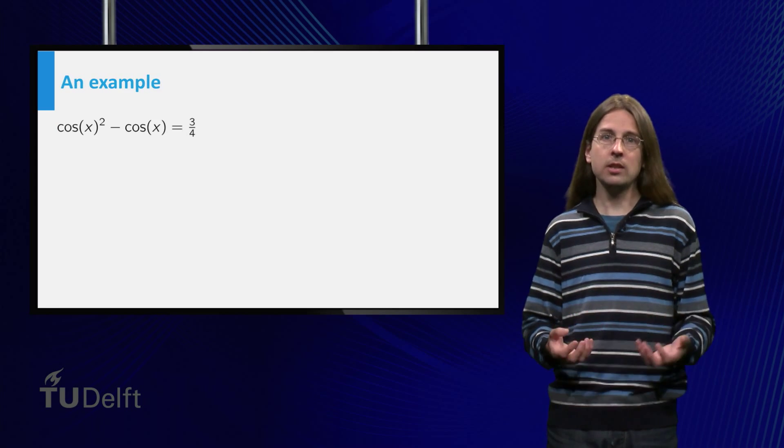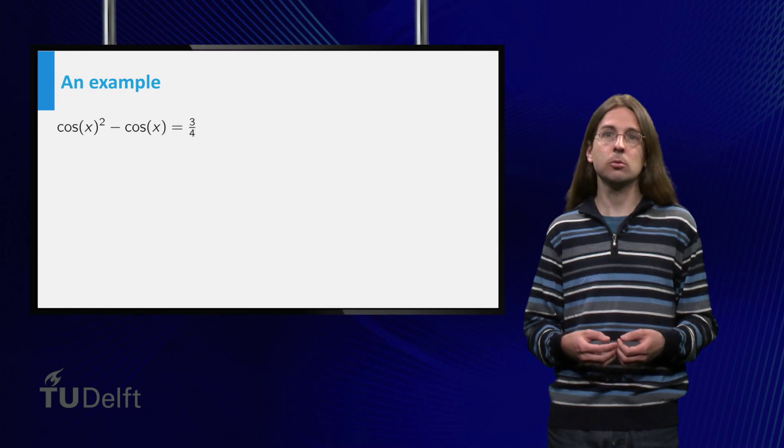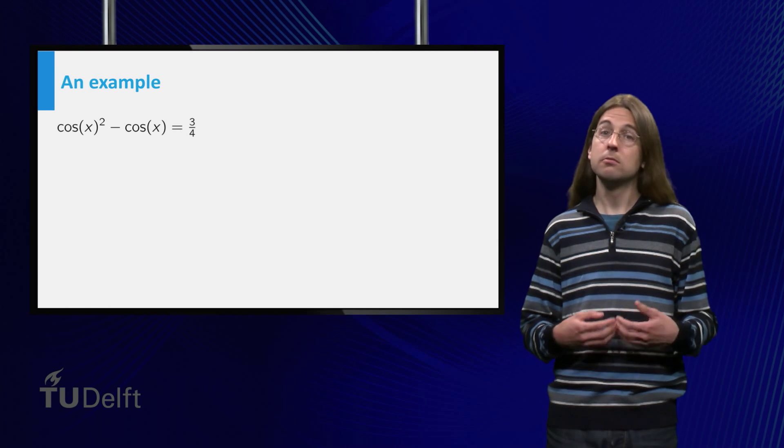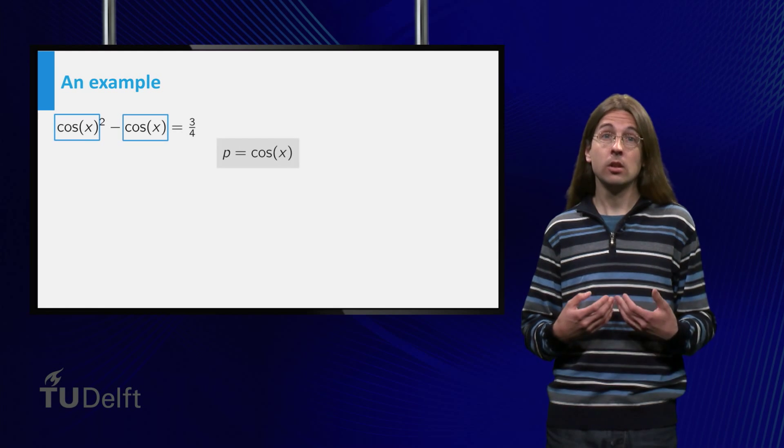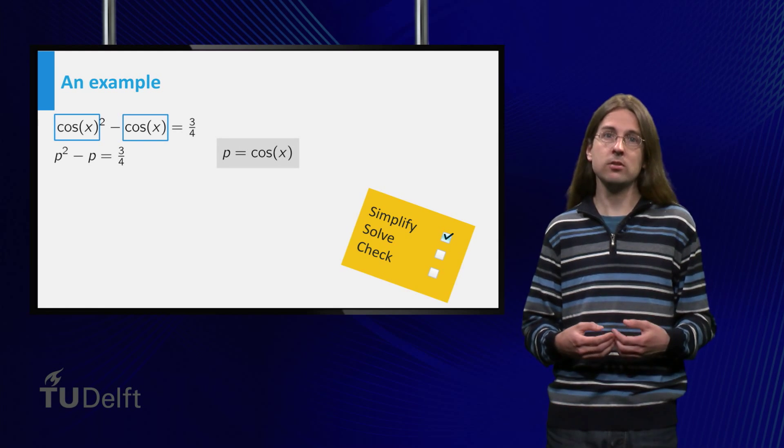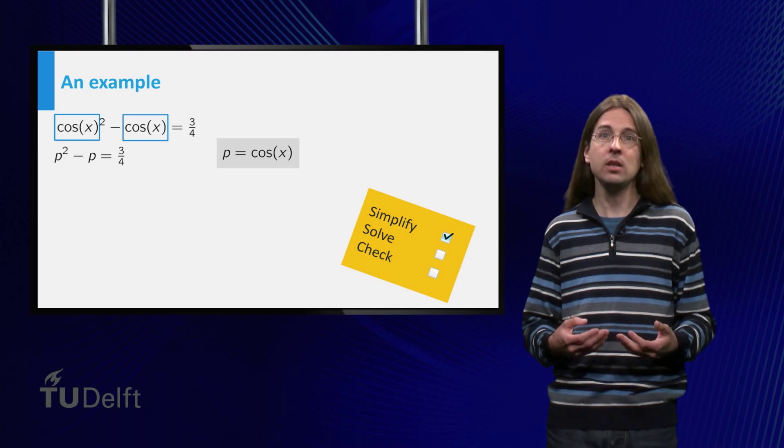Consider the example cos²(x) - cos(x) = 3/4. You can replace cos(x) by a new variable p. Using this substitution, the equation simplifies to p² - p = 3/4.